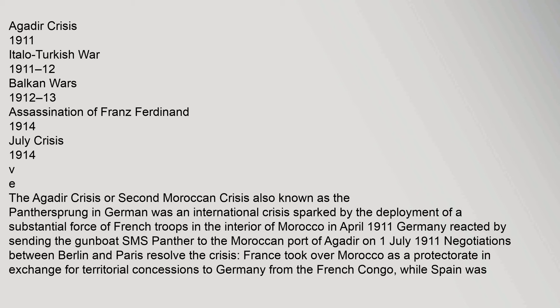The Agadir Crisis, or Second Moroccan Crisis — also known as the Pantherspring in German — was an international crisis sparked by the deployment of a substantial force of French troops in the interior of Morocco in April 1911. Germany reacted by sending the gunboat SMS Panther.